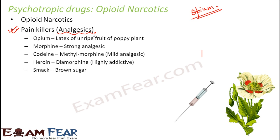Opium is reddish brown in color, has a very strong smell, and also a bitter taste. It slows down respiratory activity, affects digestion, and can also cause sterility — that is, infertility. Opium is obtained from the latex of the unripe fruit of the poppy plant. All the other analgesics — whether morphine, codeine, heroin, or smack — are all derivatives of opium.